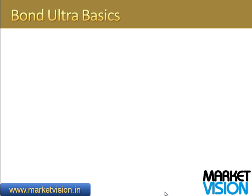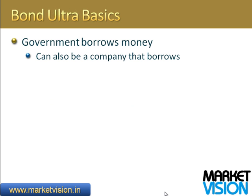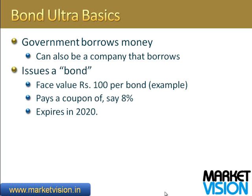Let's go back to the basics. Governments and companies borrow money and they give you bonds. An example could be a face value or par value of 100 rupees per bond, paying a coupon of 8%. That means they are paying an interest of 8% per year, and this matures in 2020. That means in 2020 you get back your principal.